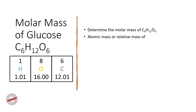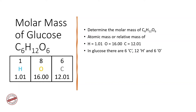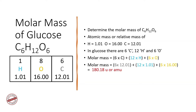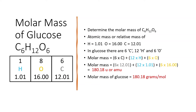We will determine the molar mass of glucose. In glucose there are six carbon atoms, 12 hydrogen atoms, and 6 oxygen atoms, so we write it as 6 × C + 12 × H + 6 × O. Substituting the relative atomic masses: 6 × 12.01 + 12 × 1.01 + 6 × 16. When you total it up, the molar mass of glucose equals 180.18 grams per mole.